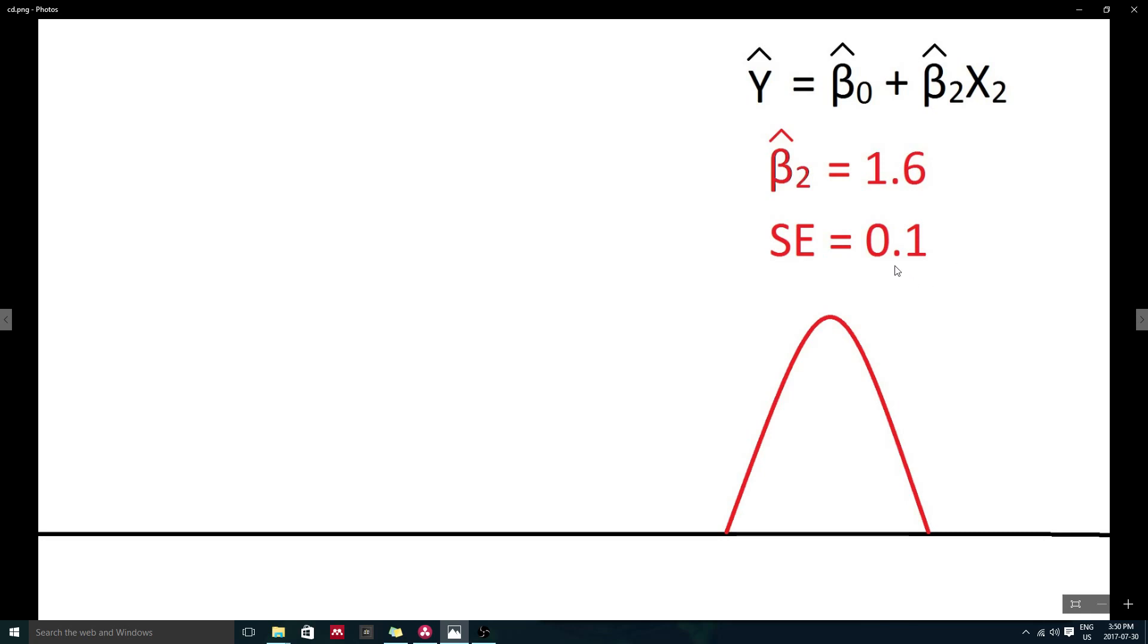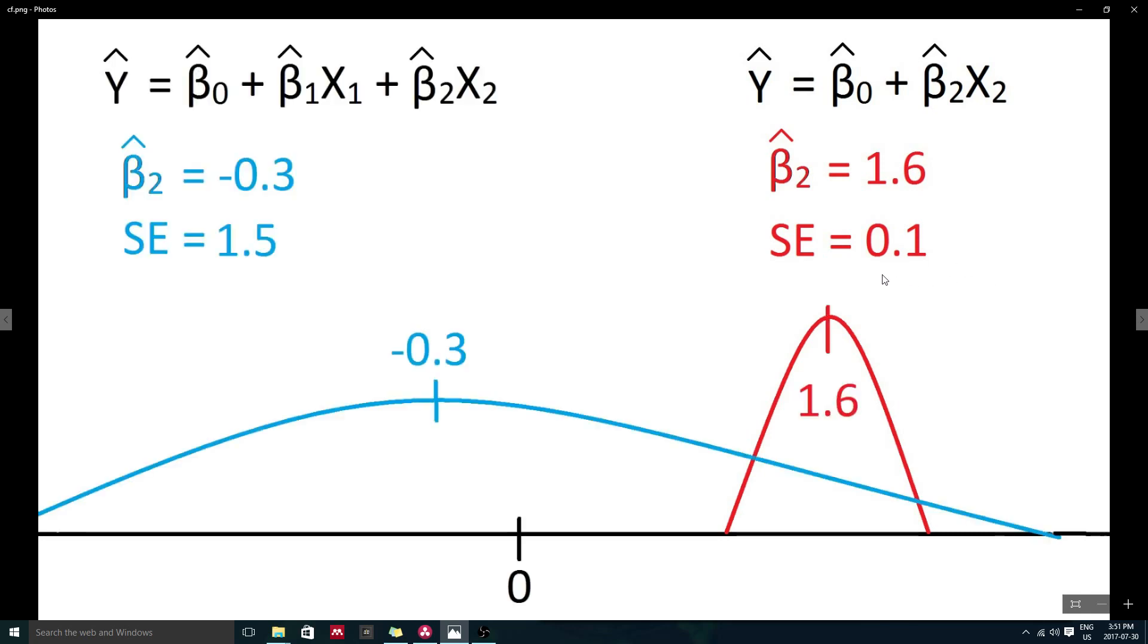However, in our multivariate model, where y is regressed onto x1 and x2, x2 has a regression coefficient equal to negative 0.3, with a standard error of 1.5.